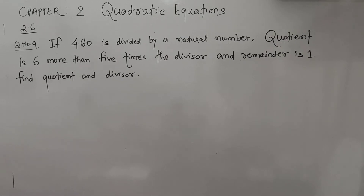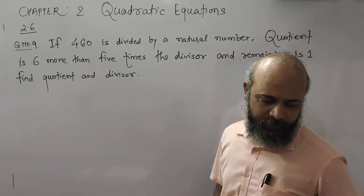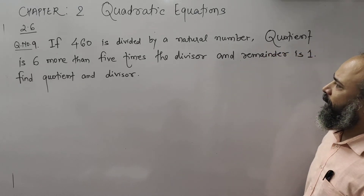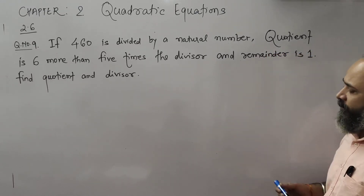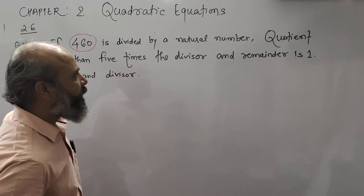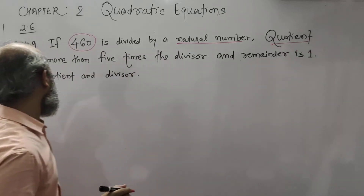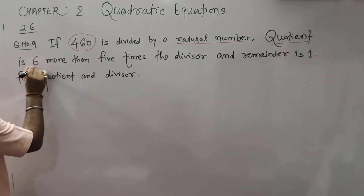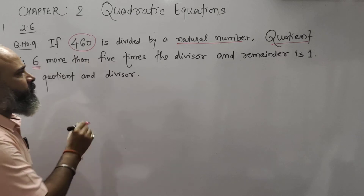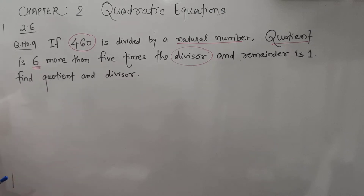Hello students, I am Ranjit sir and today we are going to study question number 9. Question number 9 is: if 460 is divided by a natural number, the quotient is 6 more than 5 times the divisor and the remainder is 1. Find the quotient and divisor.